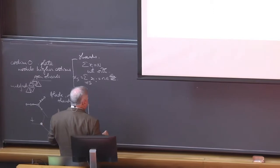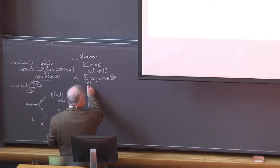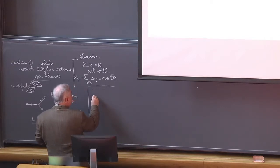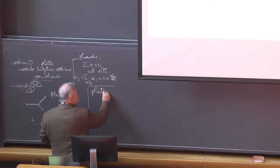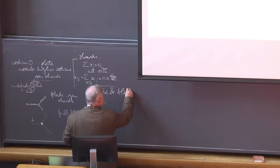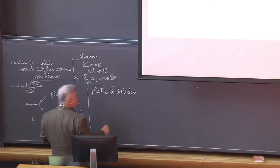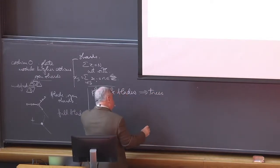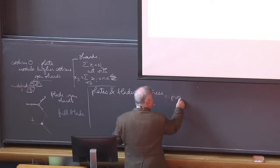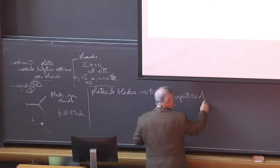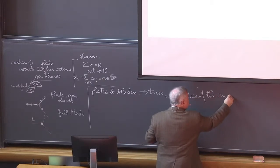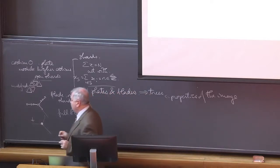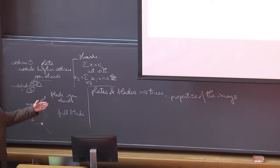One more observation: remember that we have the following properties of plates and blades. Namely, the plates and blades map into trees, and we have some properties — properties of the image of this map. The image is not all the linear combinations of trees.